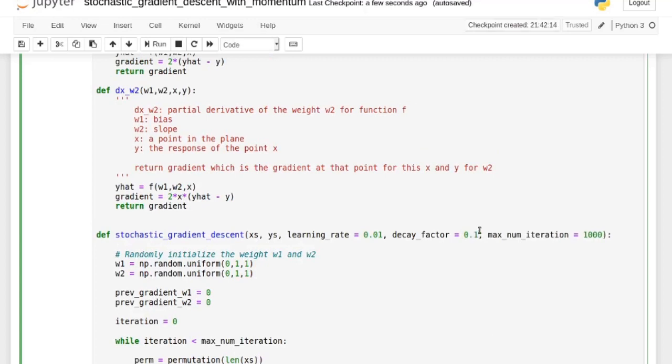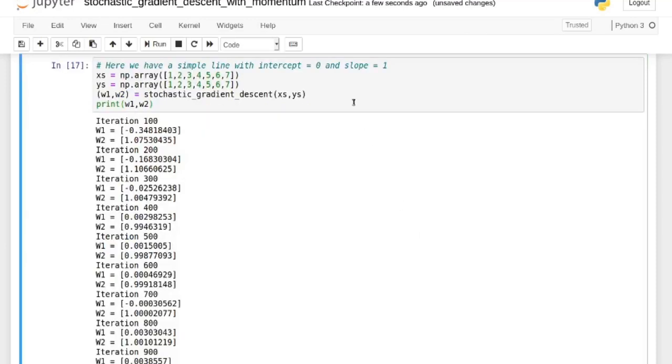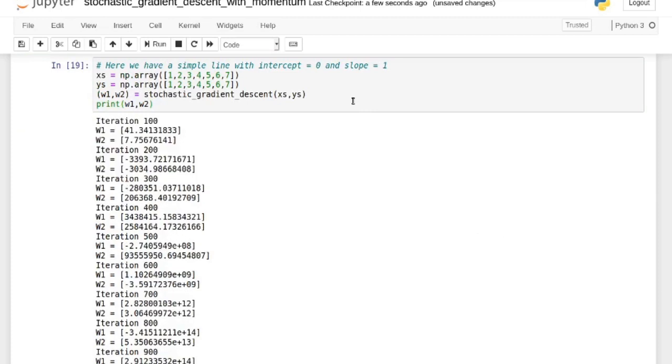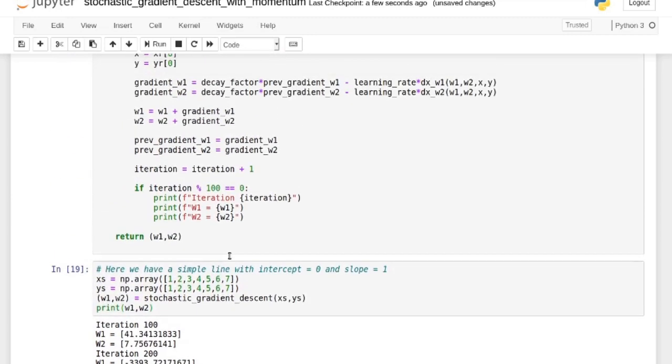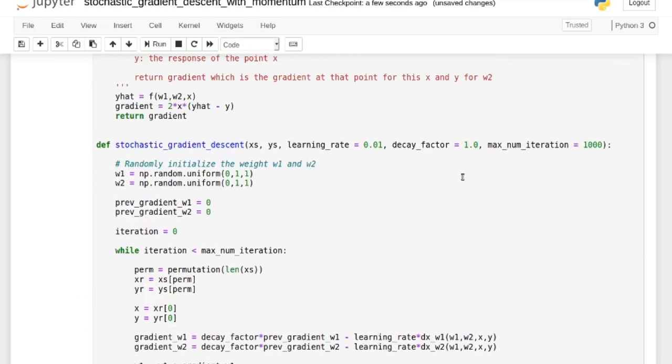If we set this to 1, if we set that to 1, it's going to have much harder time. It's going to oscillate a lot. So we overshoot, right? Overshoot a lot. But at some point, it's going to go back down. But even then, it's not optimal. So you have to be careful with that decay factor.